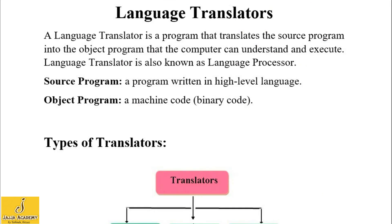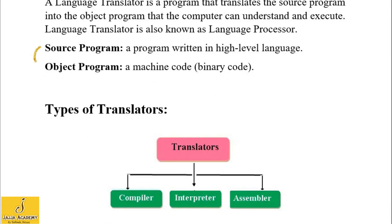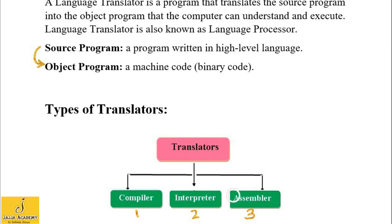Let's take a review. A language translator is a program that converts source program into object program, and there are three types: compiler, interpreter, and assembler. A compiler converts a high-level program into machine-level program as a whole. An interpreter converts a high-level language into machine code line by line, not as a whole. And the assembler converts an assembly language program into machine code.